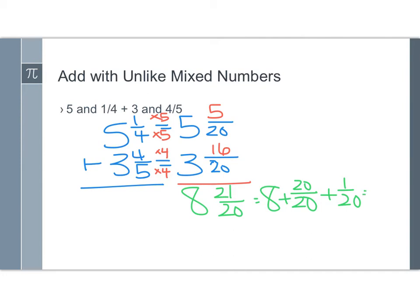And then finally, 8 plus 20/20. Well, 20/20 is one whole, so 8 plus 20/20 would be 9 plus 1/20, which is 9 and 1/20. And I can't simplify 1/20 any further, so my answer here is complete. It's a lot of steps, but these are all steps that you've already done.